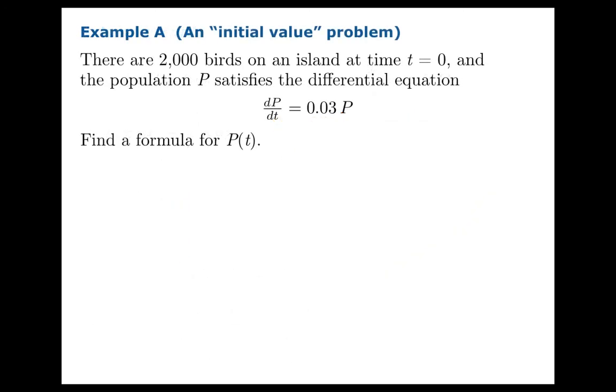So in this example, there are 2,000 birds on an island at time t equals zero, and the population p satisfies dp/dt equals 0.03p. We want to find a formula for p of t.